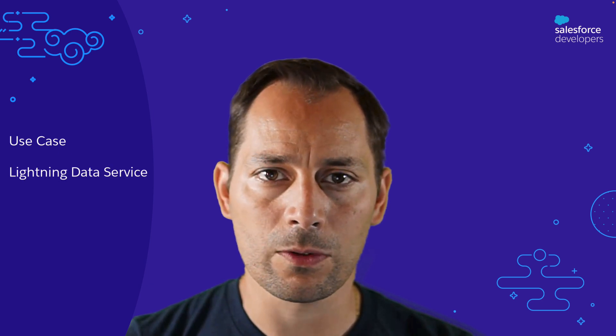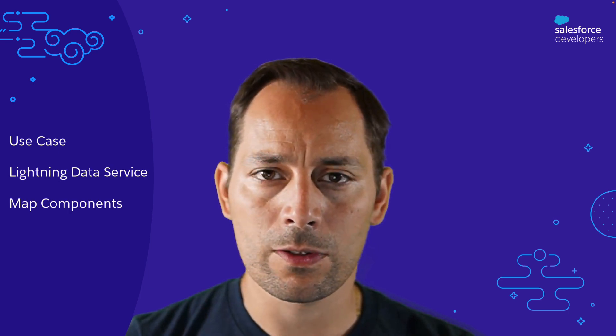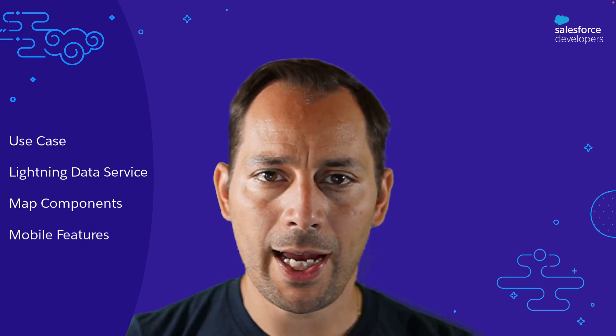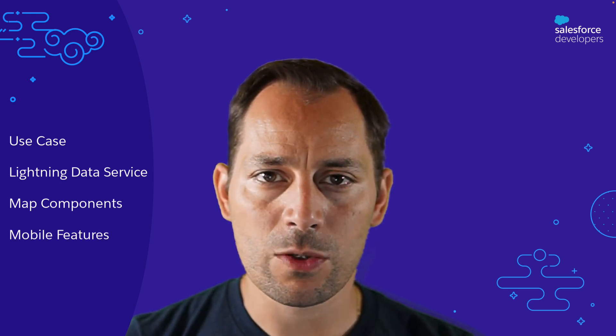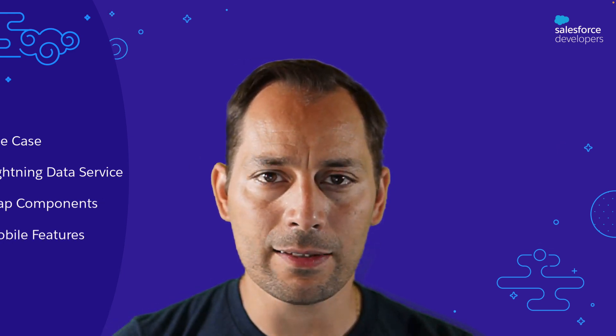First, I'll explain the use case and then we'll take a look at key features. For example, we'll talk about Lightning Data Service, we'll explore the different map components that are part of the app, and we'll finish with some of the mobile features that are highlighted in this app.